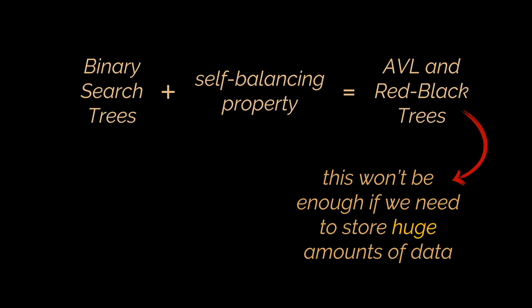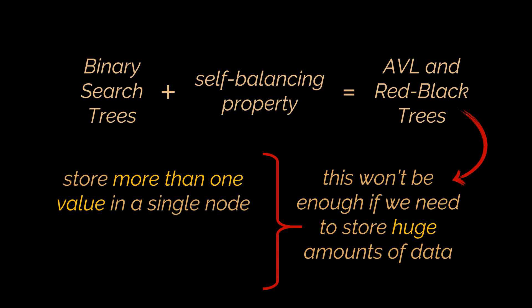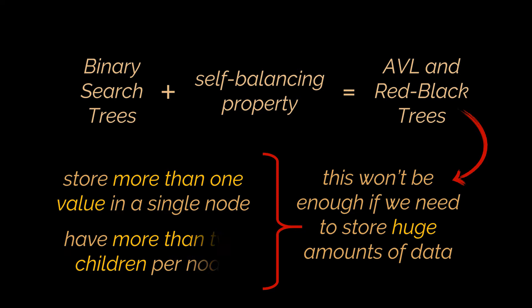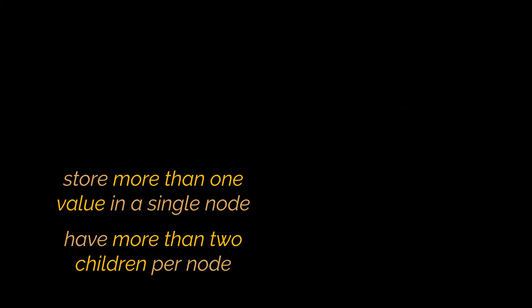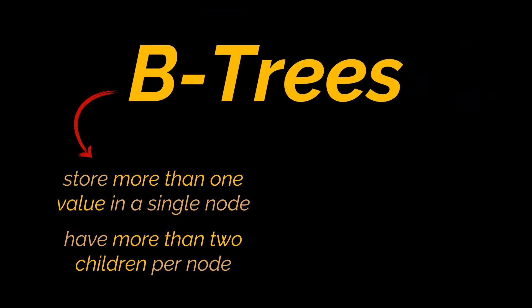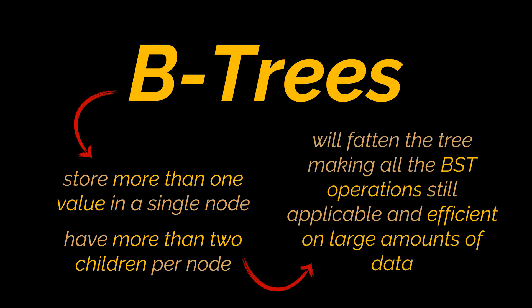Therefore we may find ourselves in need to store more than one key or value in a single node, or we may think that having more than two children per node can help us maintain the height of our tree at a lower level. That is exactly what B-trees allow us to do. These trees are the generalization of the self-balancing binary search trees we previously covered, so instead of storing a single key or being limited to two children per node, we can fatten this tree as we please, reducing its height and making all operations efficient on large amounts of data.